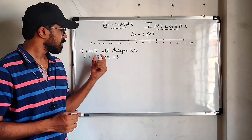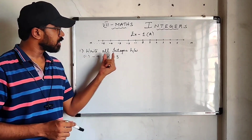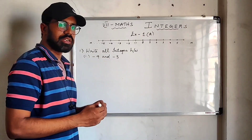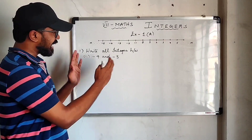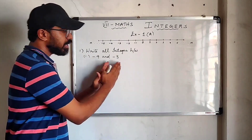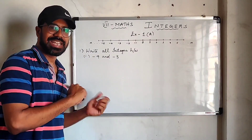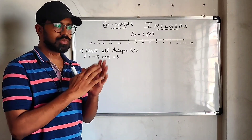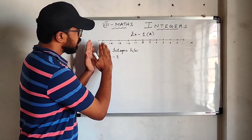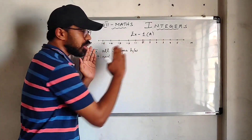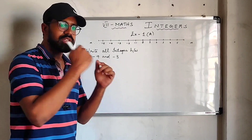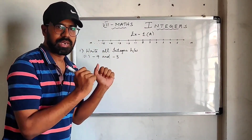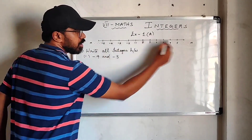The first sum is: write all the integers between minus 9 and minus 3. Now they are asking you to write the integers between both of these negative integers. Before starting, I want you to keep this in mind — represent all the integers on a number line. So whenever you are going to solve a sum, just imagine the integers on a number line.